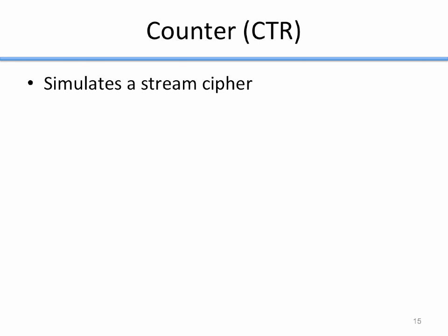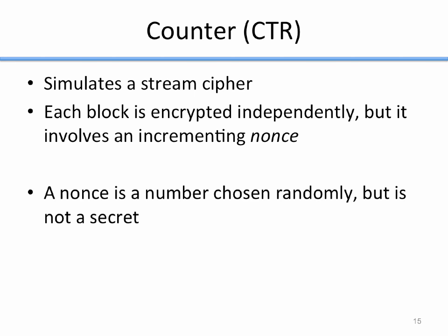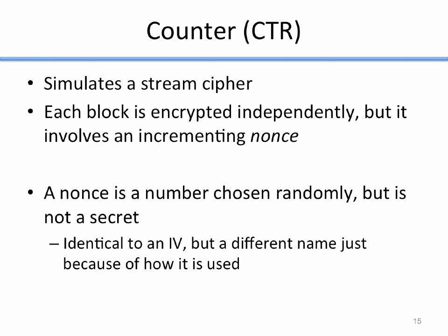There are other operating modes that don't have that problem. One is called Counter mode, abbreviated CTR. Counter mode simulates a stream cipher — we take a block cipher and effectively turn it into a stream cipher. Each block is encrypted independently, but involves an incrementing nonce to prevent repeatability issues. A nonce is a number chosen randomly but it's not a secret — basically identical to an initial vector in how it's chosen, but called a nonce because it's used with every block, not just the initial one.